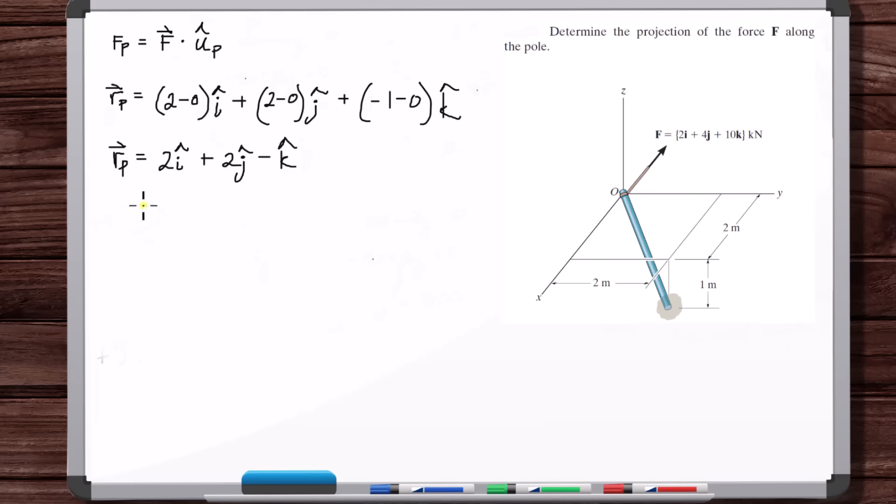So now let's make a unit vector out of this. So the magnitude of this vector is, so 2 squared is 4, 4 plus 4 is 8, plus 1 squared, so 9, so 3. So U, in the direction of the pole, the unit vector is 2/3 i hat plus 2/3 j hat minus 1/3 k hat.